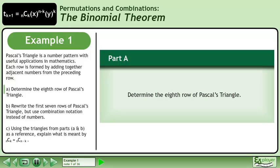Pascal's Triangle is a number pattern with useful applications in mathematics. Each row is formed by adding together adjacent numbers from the preceding row.